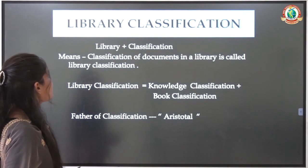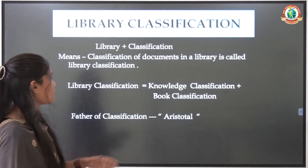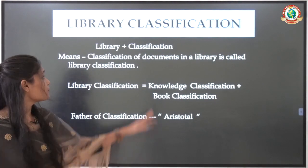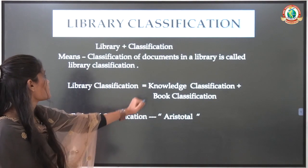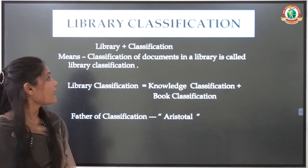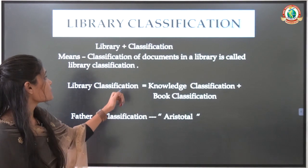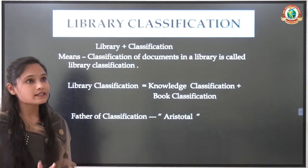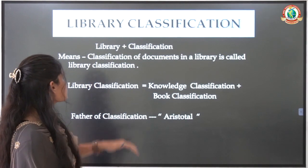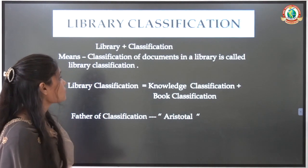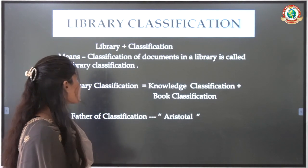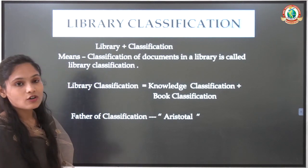Now we are discussing library classification. Library classification is two words: library and classification. Library means house of books, and classification means grouping or division. So library classification means grouping or organizing the documents within a library.